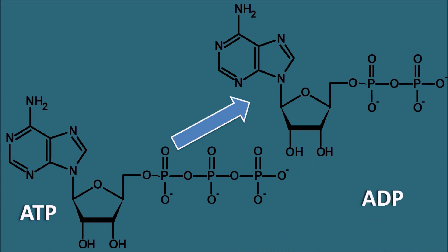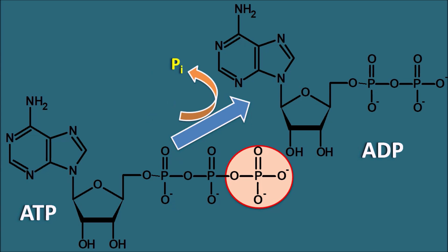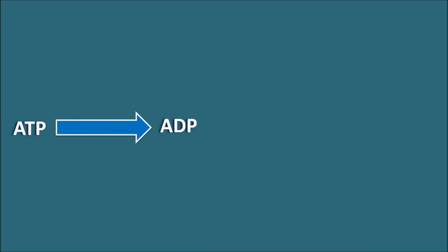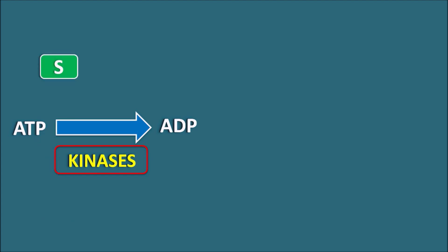ATP can be converted into ADP by a dephosphorylation reaction where the terminal phosphate group is removed. This reaction is not mediated by phosphodiesterases — it is mediated by enzymes called kinases. Kinases are phosphorylating as well as dephosphorylating enzymes. They often work in coupled reactions: when ATP is converted into ADP, a substrate simultaneously takes the phosphate group and becomes a phosphorylated substrate.